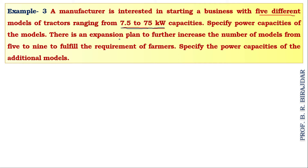There is an extension plan to further increase the number of models from 5 to 9, to fulfill the requirement of farmers. We need to specify the power capacities of the additional models. The given range is 7.5 to 75, and we have to divide this range into five models first, then convert to nine models.